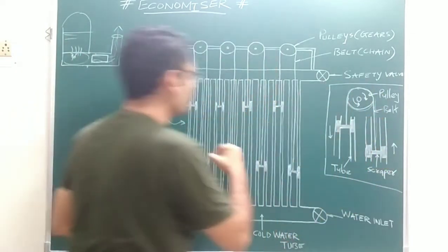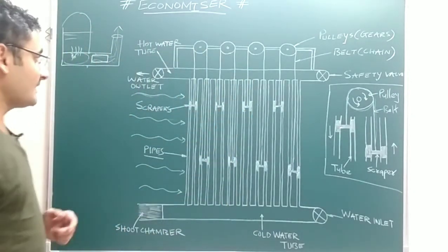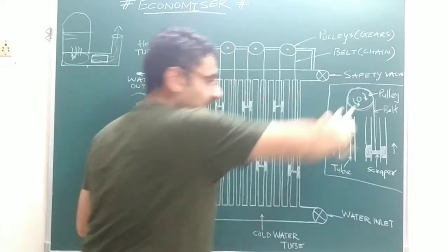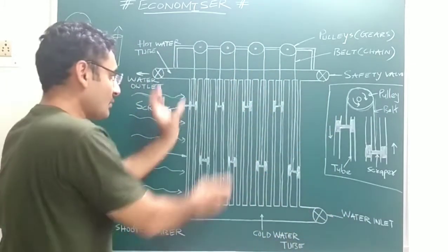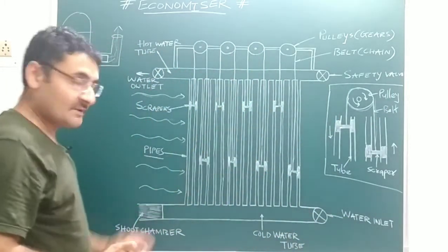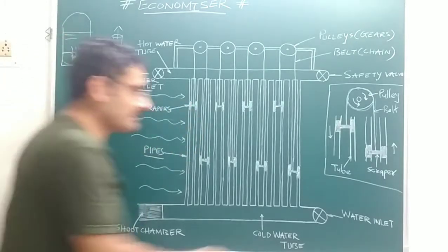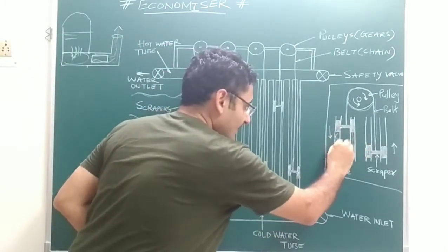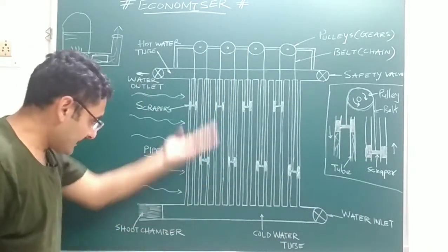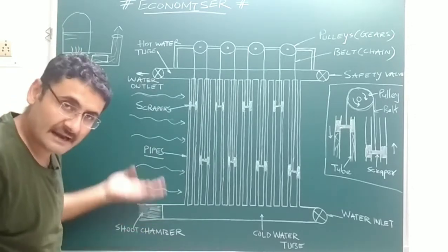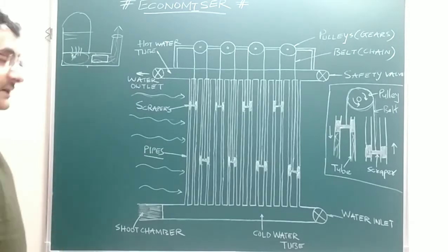Inside the small tubes, scrapers are present. I have enlarged that portion here — scrapers are present in the small tubes and are connected with the help of a belt or chain. That belt or chain is mounted on a pulley or gear. As the pulley rotates in clockwise and anti-clockwise directions, the scrapers move upward and downward inside the tube. The scrapers remove the scale or impurities present inside the tube, and those impurities are collected in the sludge chamber at the bottom of the tubes.